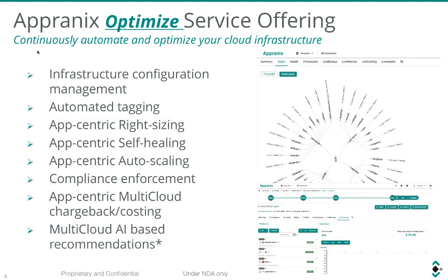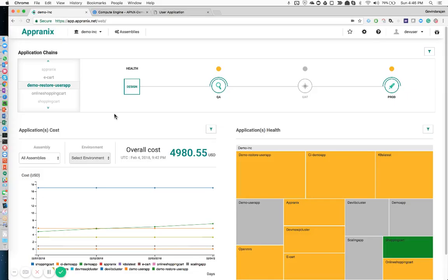The optimization service offering gives you base infrastructure configuration management, automated tagging, rightsizing from an application-centric perspective, and self-healing capabilities where, based on monitoring information, the system automatically self-heals your application infrastructure. You can also auto-scale in a cloud-neutral way through our platform and how it works in the backend with Google Compute Engine itself.